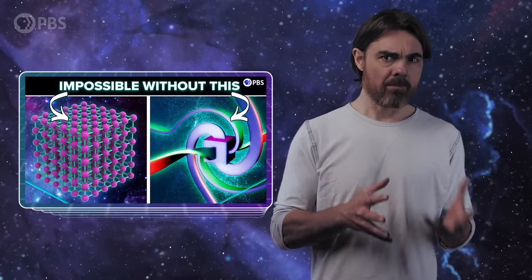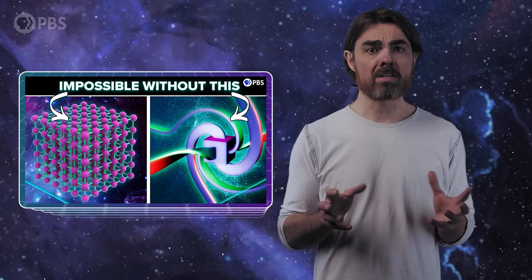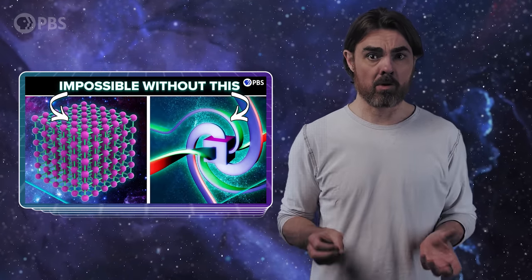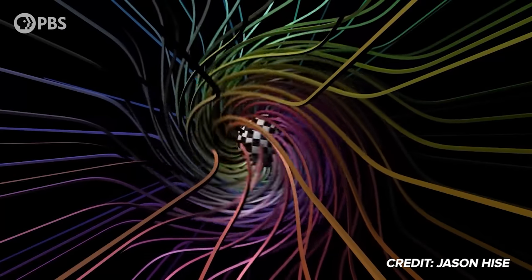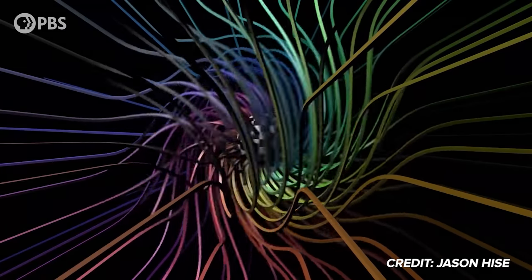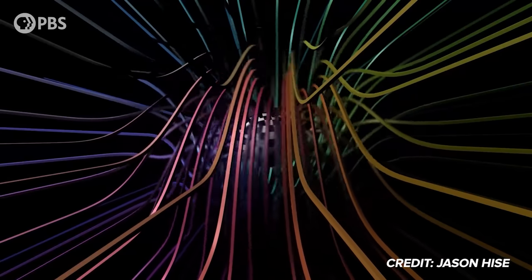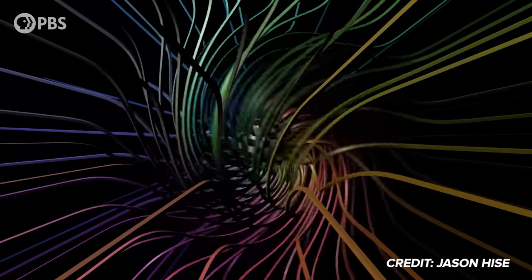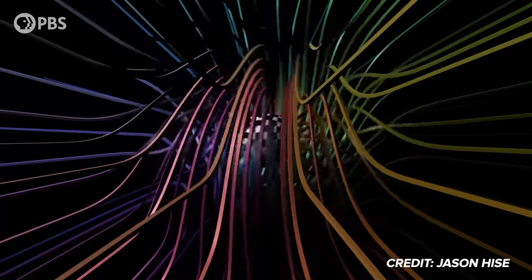In our other previous episode, we talked about the reason for the different behaviors of bosons and fermions. We saw how quantum spin determines the symmetry of the wavefunction. And it's this symmetry that determines whether two particles are allowed to have identical wavefunctions.